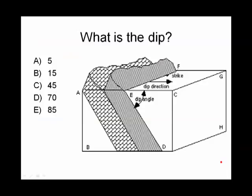What is the dip of this rock? Well, here's the dip angle. It's certainly not 5. That would be a very shallow dip, and it's not 15. 85 would be almost vertical, so you really have to decide between 45 and 70.